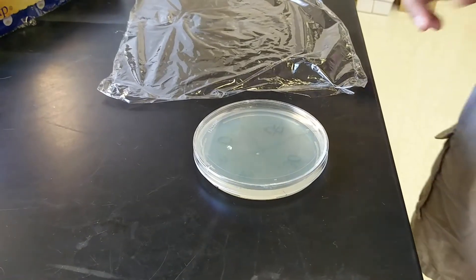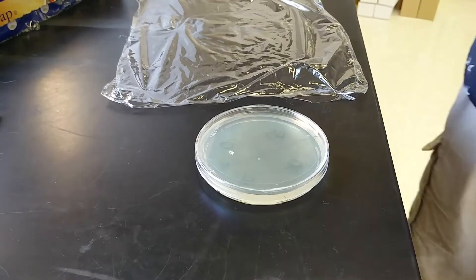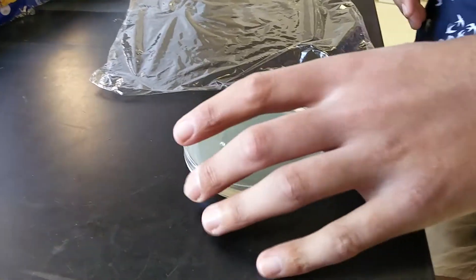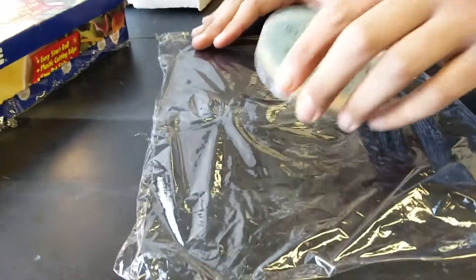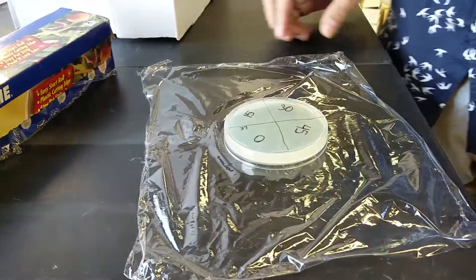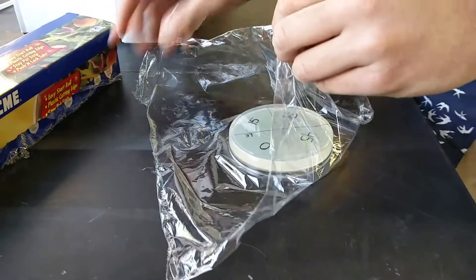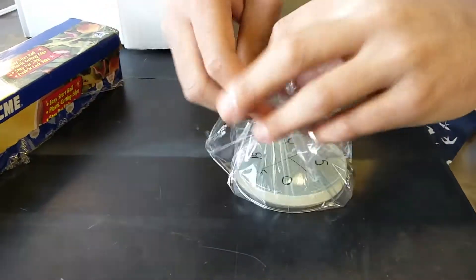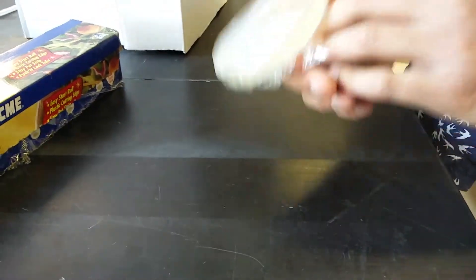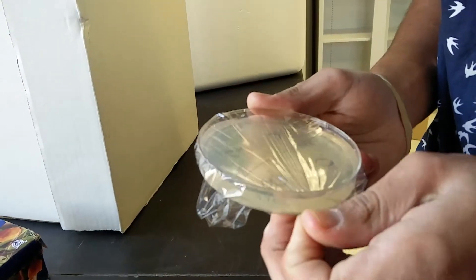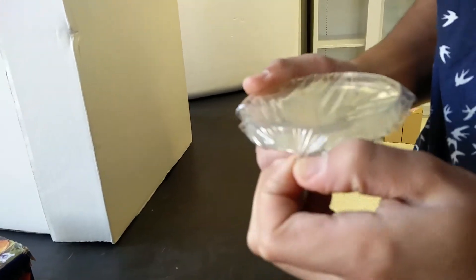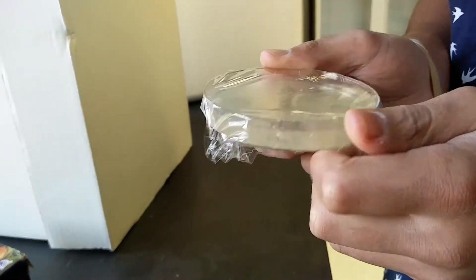You want to replace the petri dish lid with saran wrap so that you can allow the UV light to go through. Get a piece of saran wrap and flip the plate over onto the saran wrap. Take the edges of the saran wrap and bring it above the petri dish. This part is important: you have to take all the edges and tighten them so that you have as little wrinkles as possible.